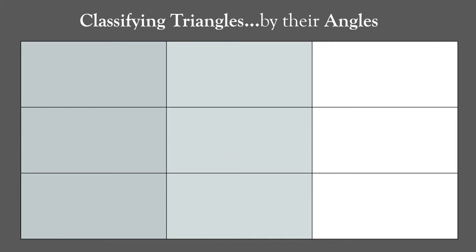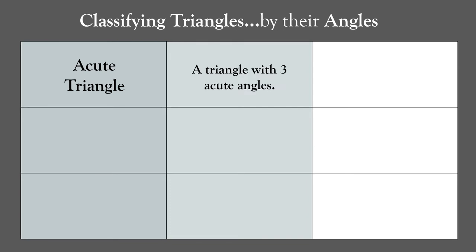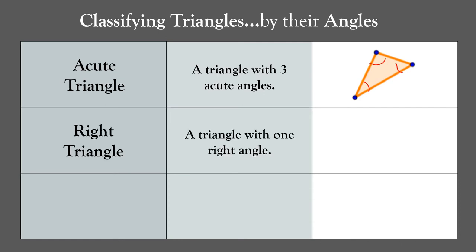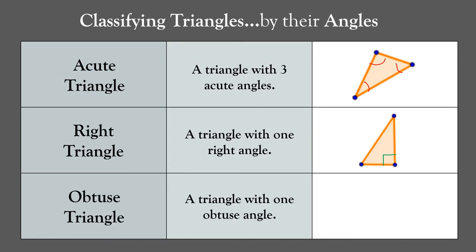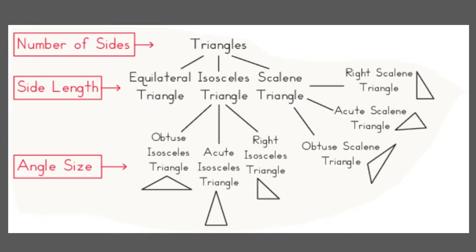Now we're going to classify triangles by their angles. An acute triangle has three acute angles. A right triangle has one right angle. An obtuse triangle has one obtuse angle, which is greater than 90 degrees but less than 180 degrees.